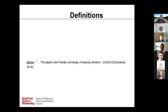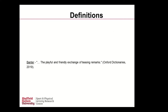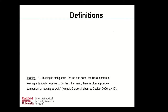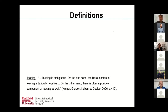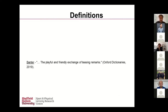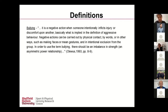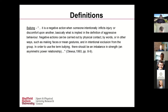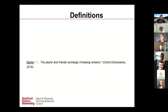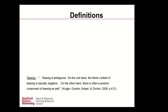Banter — not the most easily defined term in the research base — is described as a playful and friendly exchange of teasing remarks. Then we come to teasing itself. Teasing is ambiguous: on the one hand, the literal content of teasing is typically negative; on the other hand, there's often a positive component as well. If you strip these definitions back, you may have bullying — which most would accept as pretty negative — banter framed pretty positively, and teasing somewhere in between.